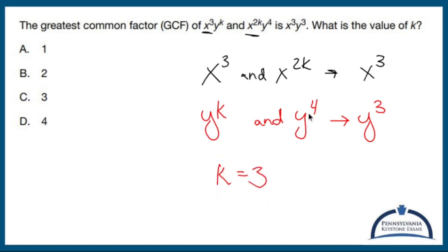So if k is three, that would make this x^6, since two times three is six. And the greatest common factor of x³ and x⁶ is x³. Yeah, k's got to be three.